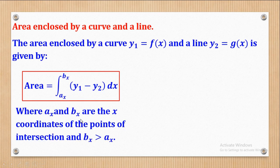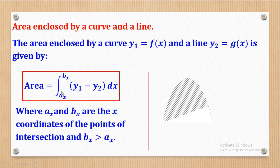Remember that b is the upper limit and a is the lower limit, meaning the bigger x-value becomes the upper limit and the smaller one becomes the lower limit. That's how you get the area.